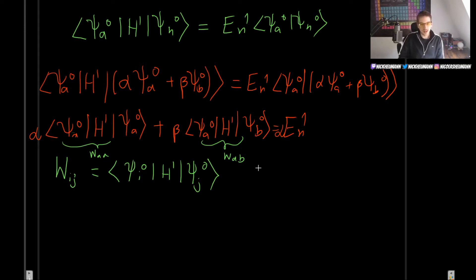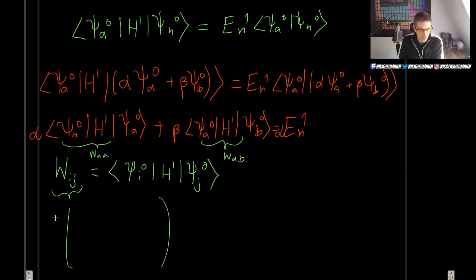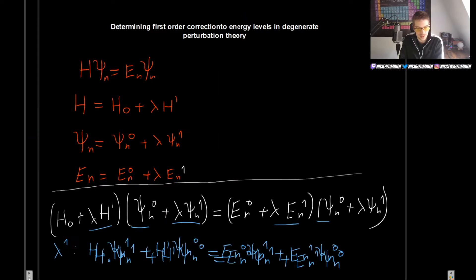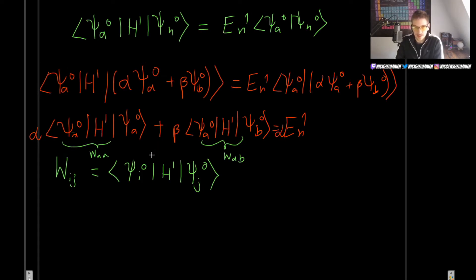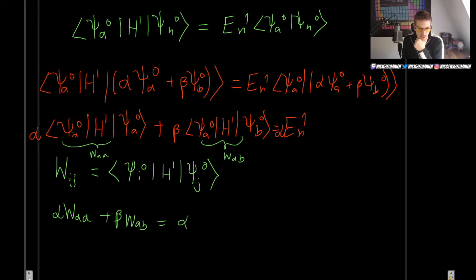Using this notation, the first equation in its final form is: Alpha W_AA plus Beta W_AB equals Alpha E_N1. We have a slight problem — we still have alphas and betas, giving us three unknowns and one equation. So we need to build at least one more equation.